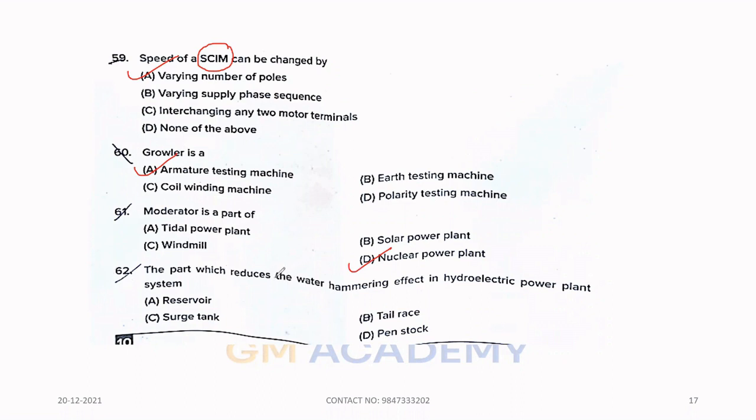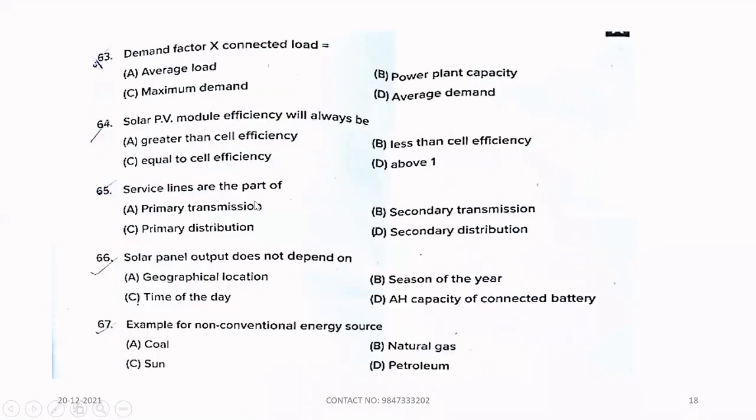Sixty-two. The part which reduces the water hammering effect in hydroelectric power plant system. Option C, surge tank. Sixty-three. Demand factor equals connected load divided by option C, maximum demand. Sixty-four. Solar PV module efficiency will always be option B, less than cell efficiency.